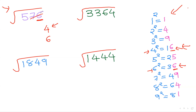Step two: remove the last two digits of the number, and focus on what's left. For example, if you're left with 5, find the largest square less than or equal to 5. 1² = 1, 2² = 4, 3² = 9 — but 9 is bigger than 5, so we can't use 3. 2² = 4 works. So the first digit of the answer is 2, giving possible answers of 24 or 26.